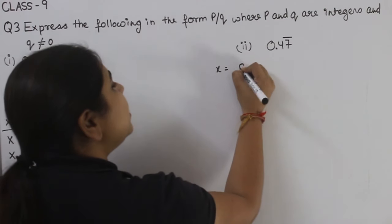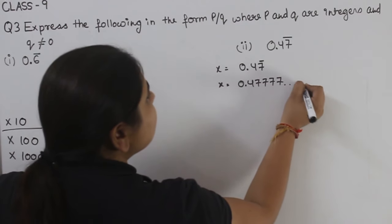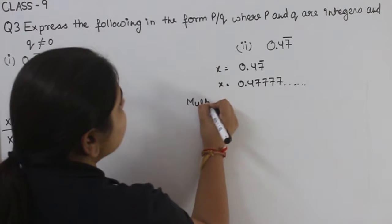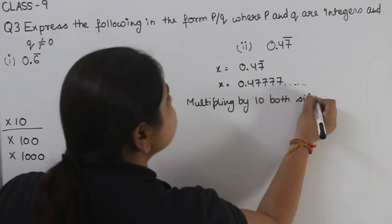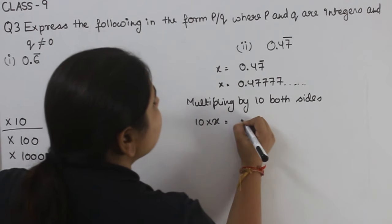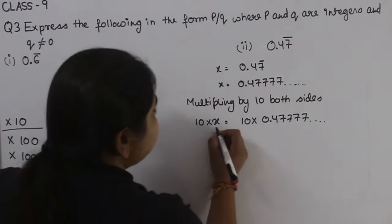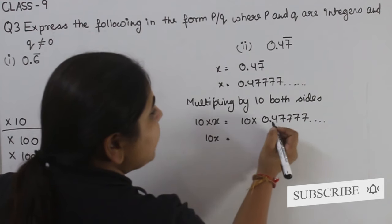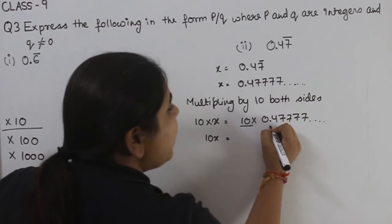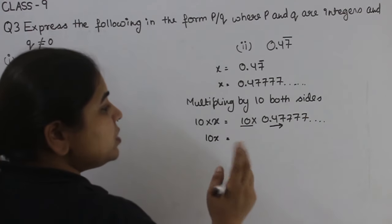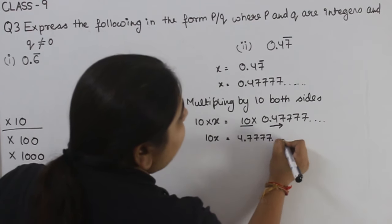Starting with x equal to 0.47777 and so on. Since there is a bar on only one digit, we multiply both sides by 10. Shifting the decimal one place to the right gives 10x equal to 4.77777 and so on.